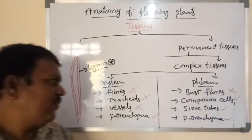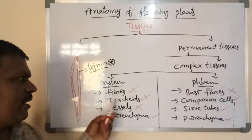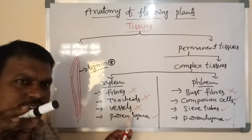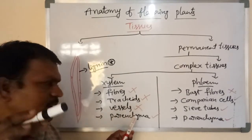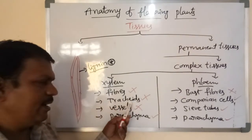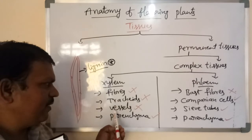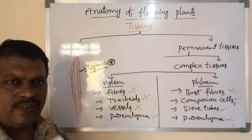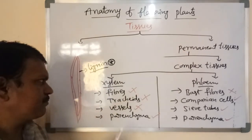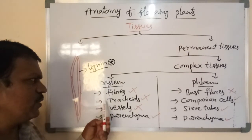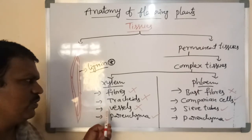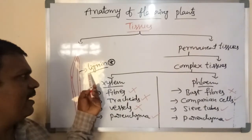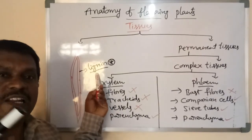What is the difference between tracheids and vessels? You must study and practice tracheid diagrams, vessel diagrams, and their paragraph content from NCERT. Don't forget. Xylem fibers, tracheids, and vessels are all basically made up of lignin.